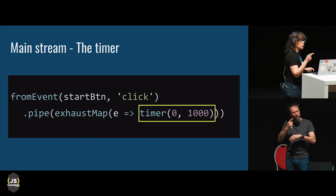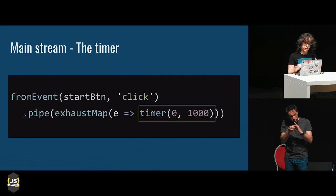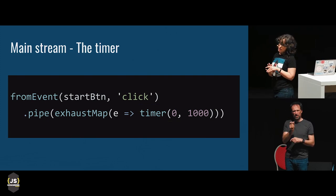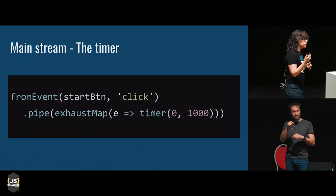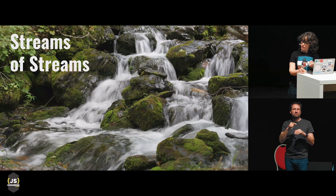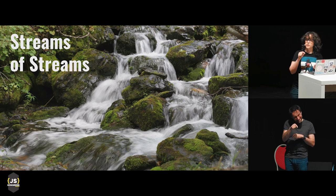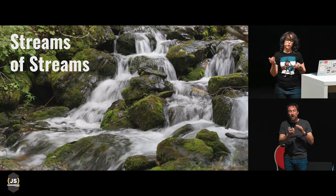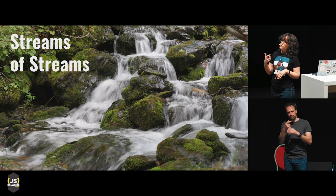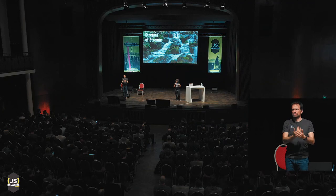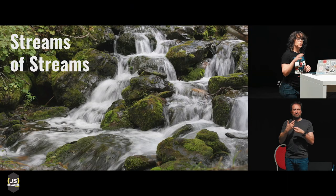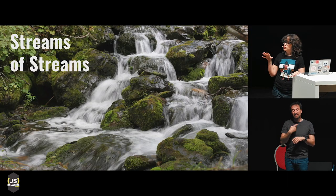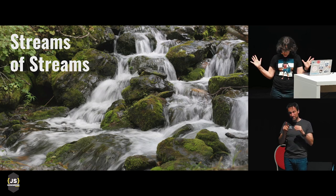ExhaustMap is a higher-order operator, and that means it helps us deal with streams of streams. Up until now we've seen streams that emit values, events, integers — but streams can also emit other streams, and in fact this ability is what allows us to create complex behaviours in FRP. However, when we're working with streams of streams, we need higher-order operators to help us manage the result.